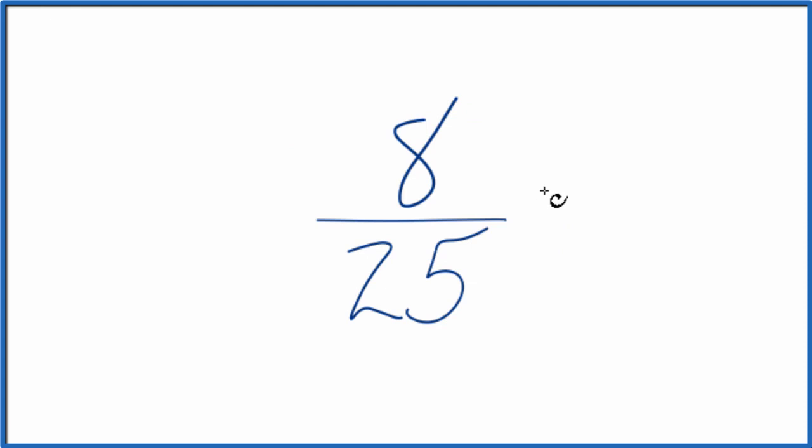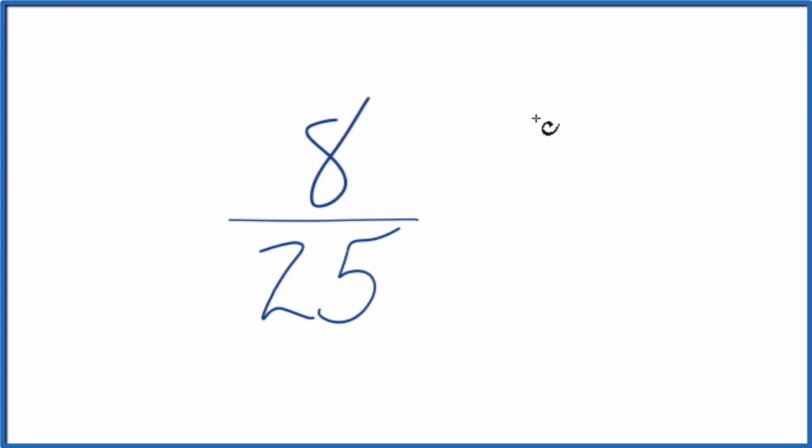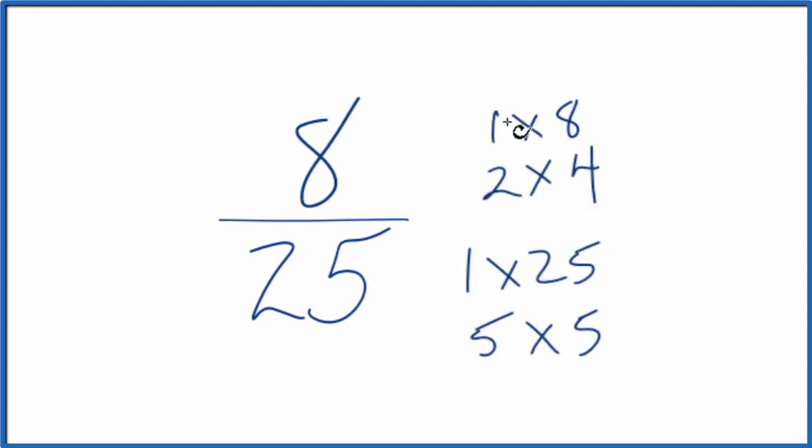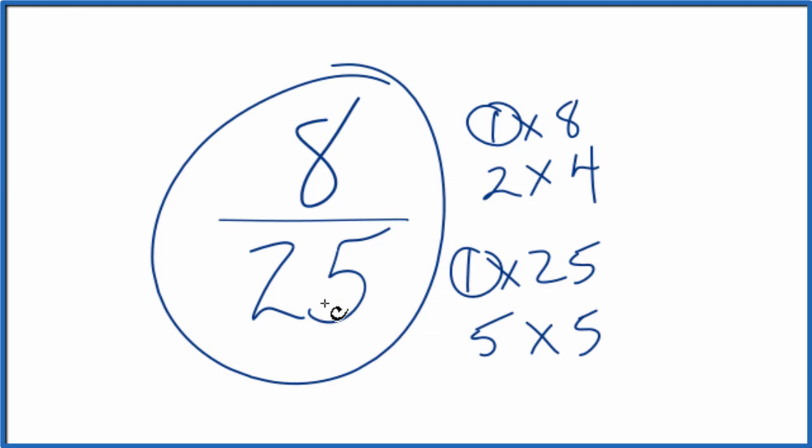If we look at the factors for both 8 and 25, they look like this. So you can see the factors for 8 and 25. The only thing that's in common is 1. So you divide 8 by 1, you get 8. 25, you divide that by 1, you get 25. 8/25, that's what we started with.